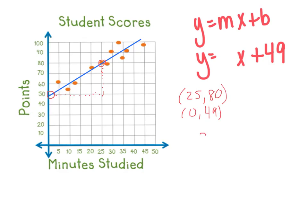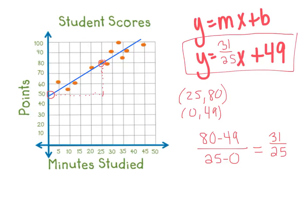I like to do it algebraically. So we'll go 80 minus 49, change in our y over the change in our x, or our rise over our run if you prefer that. 80 minus 49 is 31, 25 minus 0 is 25. So the slope of this line is 31/25. So we just wrote an equation for our trend line.